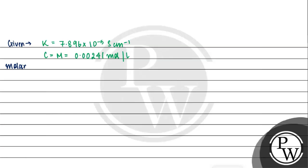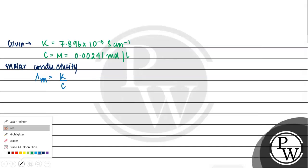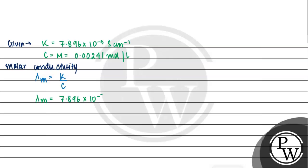By using the direct formula, we know the formula of molar conductivity: lambda m is equal to kappa divided by concentration. So molar conductivity will be equal to 7.896 into 10 to the power minus 5 divided by 0.00241 times 1000.